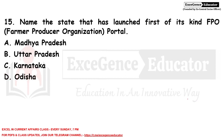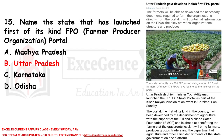The state that has launched a first-of-its-kind Farmer Produce Organization portal is Uttar Pradesh. The Uttar Pradesh government developed India's first FPO portal. Farmers will be able to download the necessary documents required to form organizations directly from the portal. Chief Minister Yogi Adityanath launched the UP FPO Shakti Portal as part of the Kisan Kalyan Mission at an event in Gorakhpur.